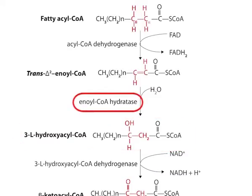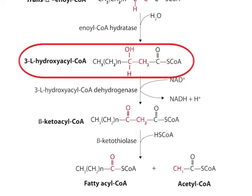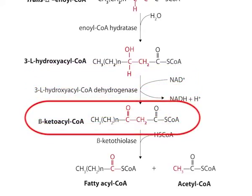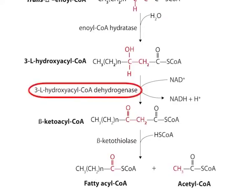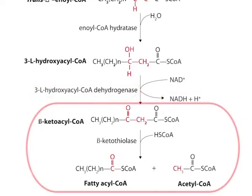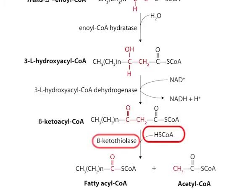In the third stage, the L-stereoisomer of beta-hydroxyacyl-CoA from the second stage is dehydrogenated to form beta-ketoacyl-CoA by the enzyme beta-hydroxyacyl-CoA dehydrogenase. Here, NAD+ is the electron acceptor, and upon being reduced to NADH, it transfers the electrons to NADH dehydrogenase. In the fourth and final stage, beta-ketoacyl-CoA is reacted with a molecule of coenzyme A by acyl-CoA acetyltransferase, also known as the thiolase enzyme. This overall step is known as thiolysis.